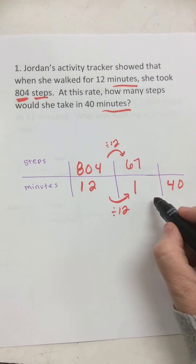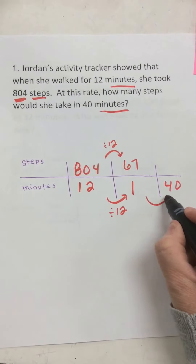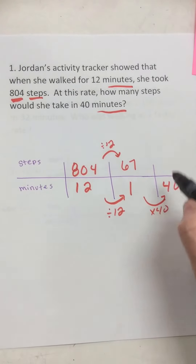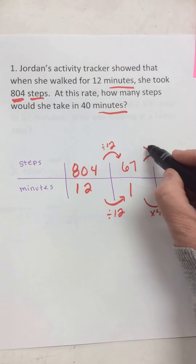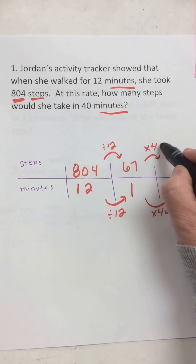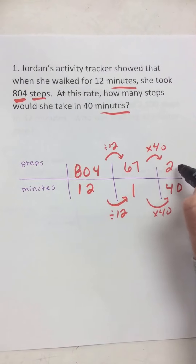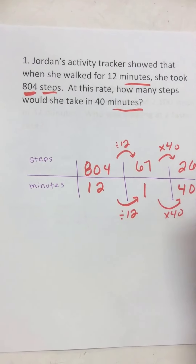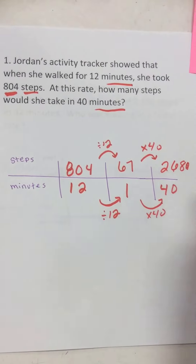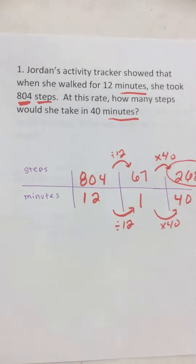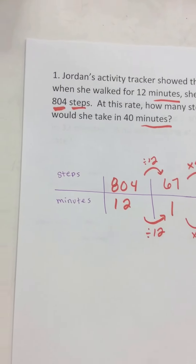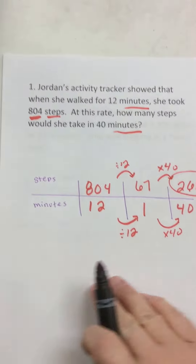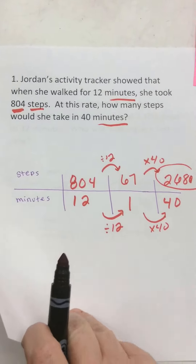Now I'm going over to 40. How do I get from 1 to 40? I multiply by 40. And I multiply by 40 on top also, and I get 2,680 — that's 2,680 steps in 40 minutes. Okay, that's number one.